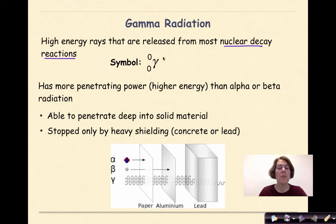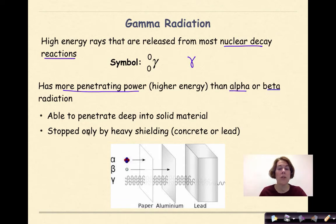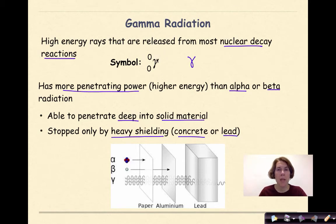Gamma radiation consists of high-energy rays released during most nuclear decay reactions. The symbol is gamma, which looks like this. Gamma radiation has more penetrating power and higher energy than alpha or beta radiation. It's able to penetrate deep into solid material and is stopped only by heavy shielding such as concrete or lead. When gamma radiation is released, the mass number does not change and the atomic number does not change.